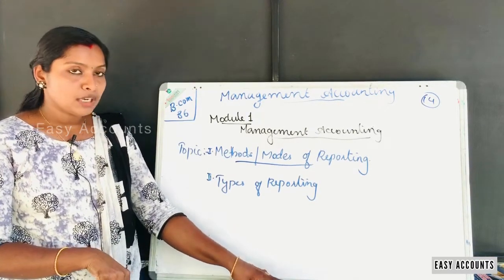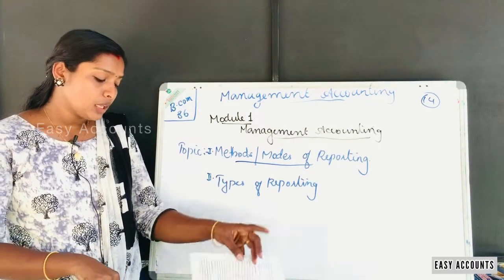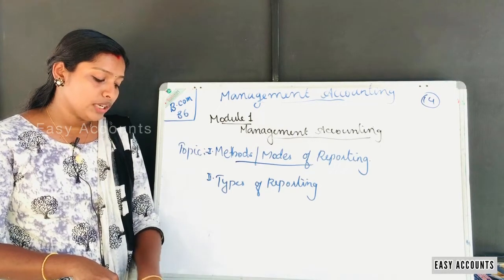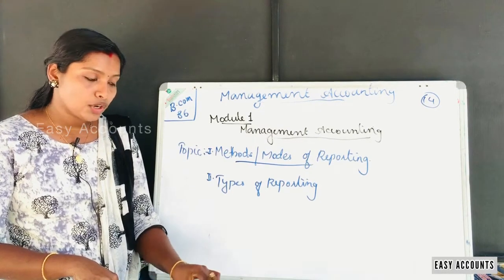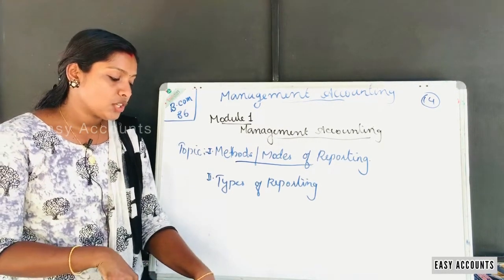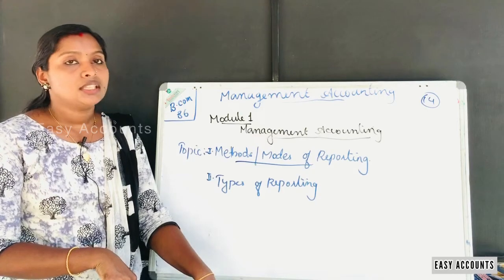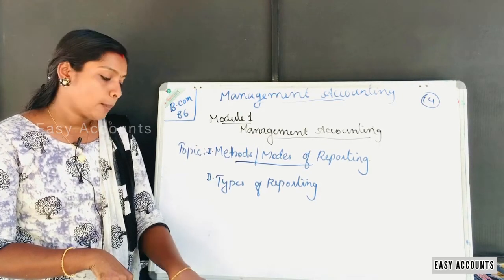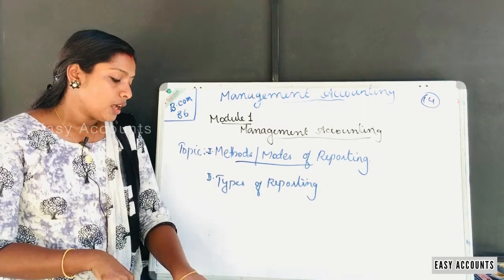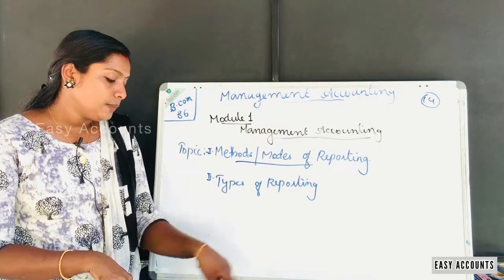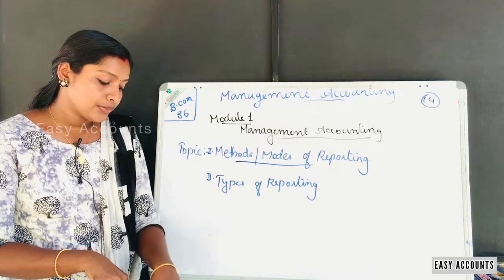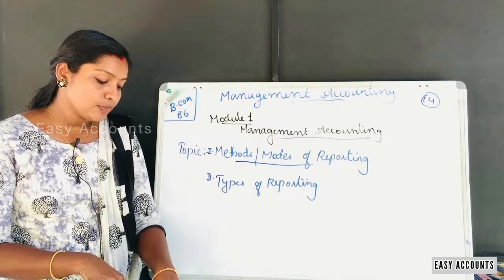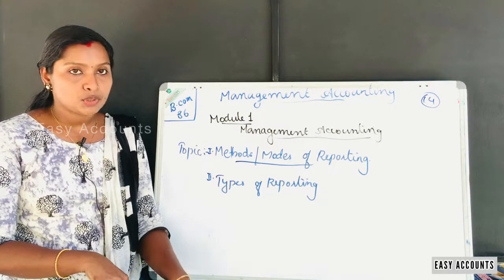The last type we call under the operating report is the venture measurement report. So under operating reports, we have the control report, the information report, and the venture measurement report.